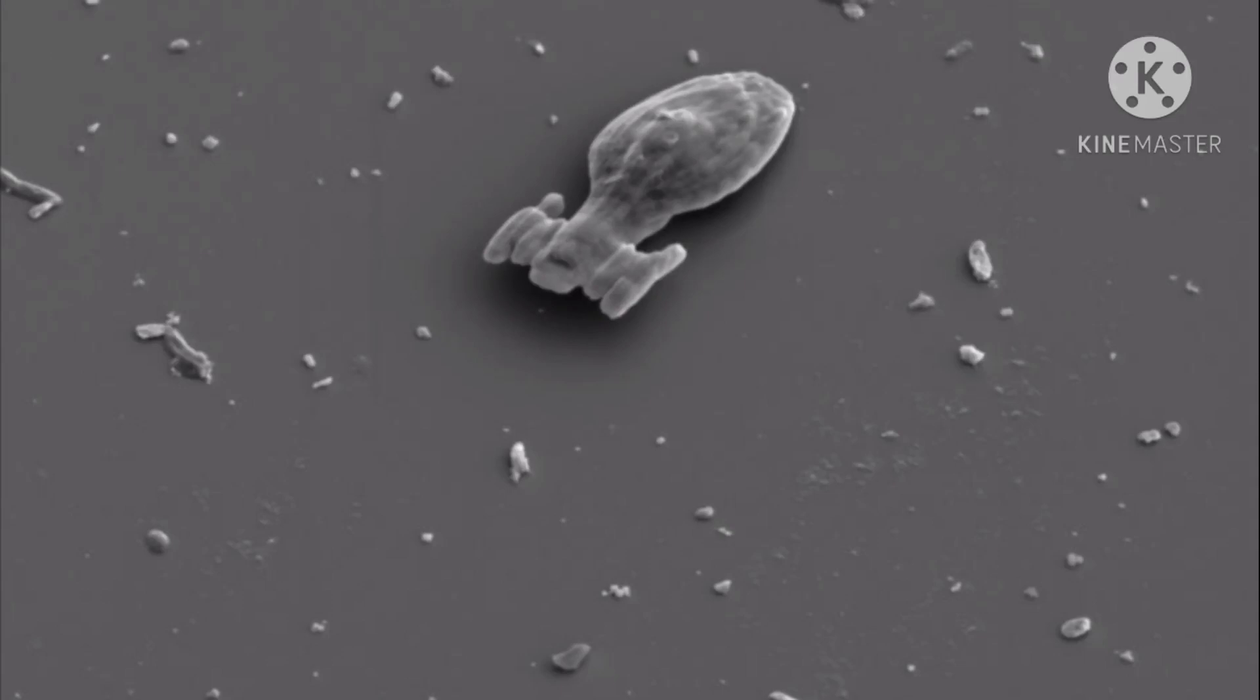A 3D printed microscopic Star Trek spaceship that moves on its own. A team of physicists at a university in the Netherlands have 3D printed a microscopic version of the USS Voyager, an Intrepid Class Starship from Star Trek.